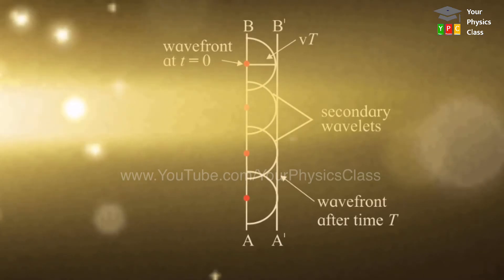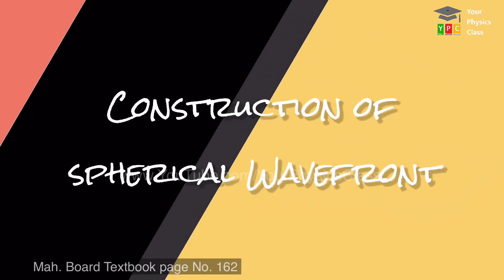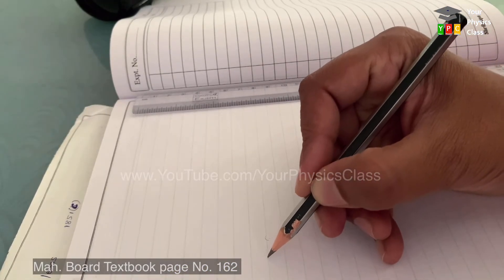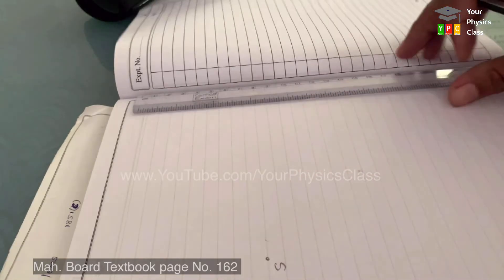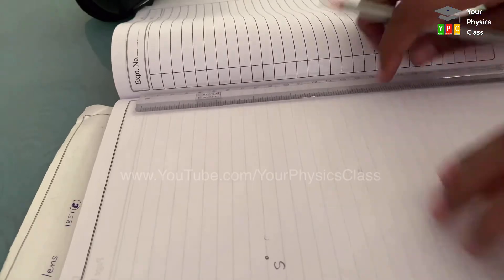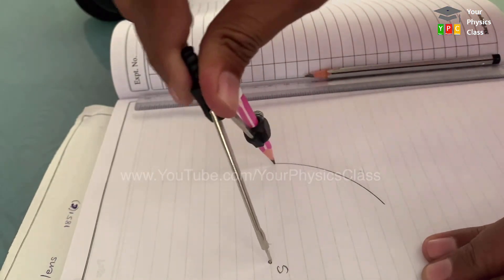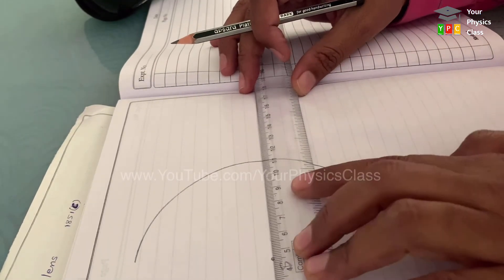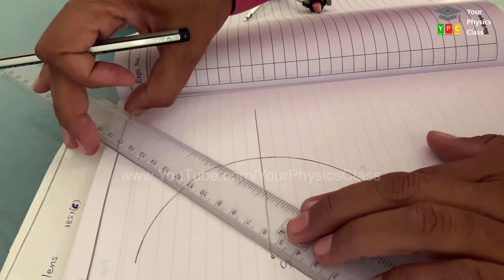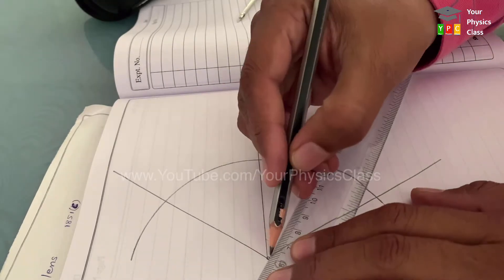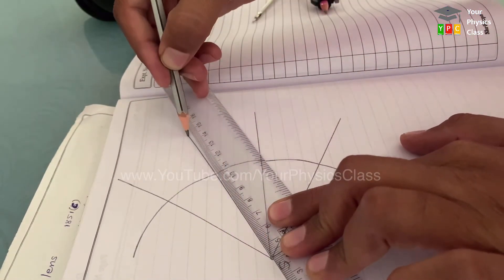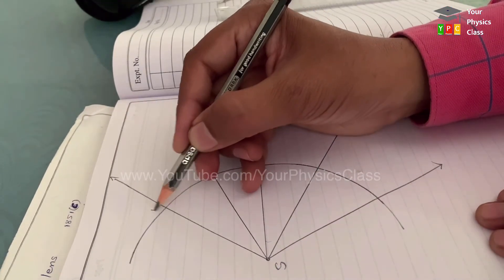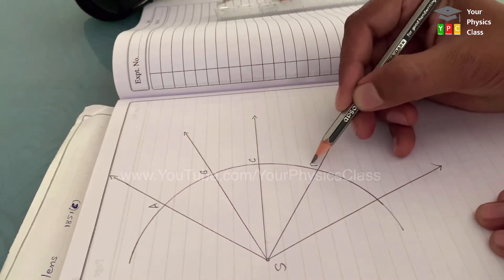Now let us see how to draw a spherical wavefront. First, take a point S, and this point S is considered a source of light. Now draw an arc of suitable radius. This arc acts as a spherical wavefront. Now draw some rays originating from point S. Now draw some rays intersecting from point S and this point is intersecting the wavefront. We will label them as a, b, c, d, and e.